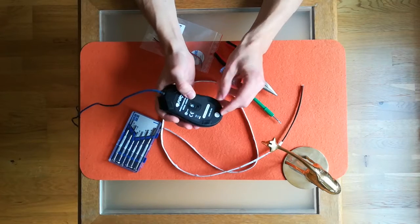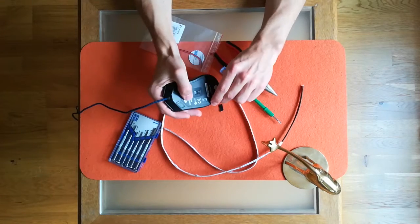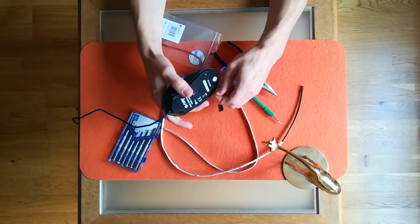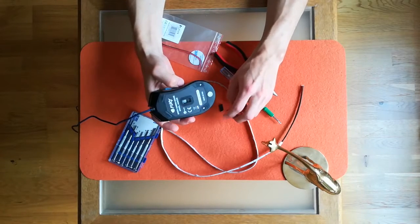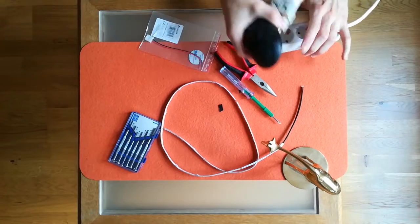So if I take the pads out I can unscrew the bottom of the mouse and then I have access to the inside. So I will try to make an LED lamp.